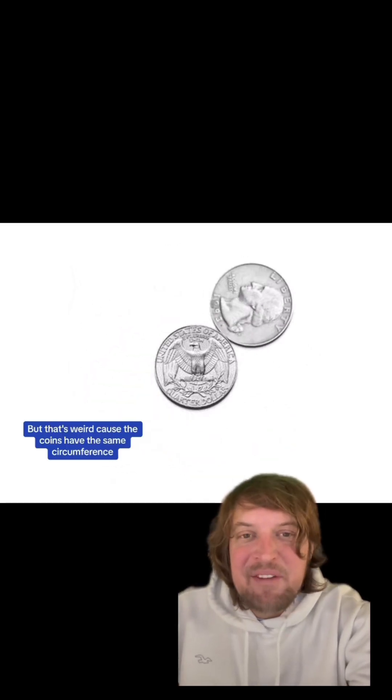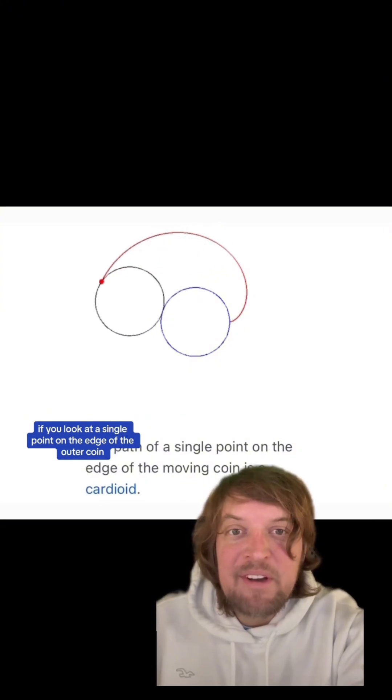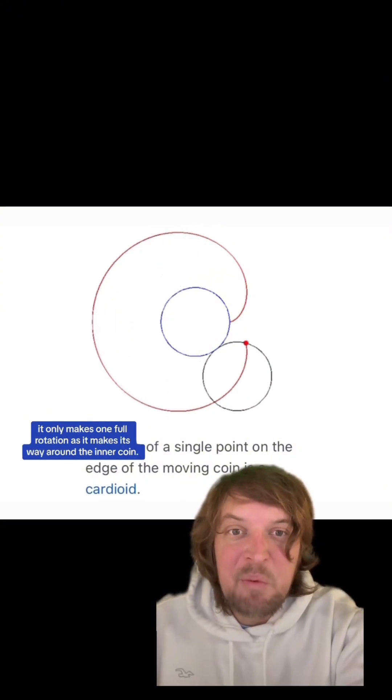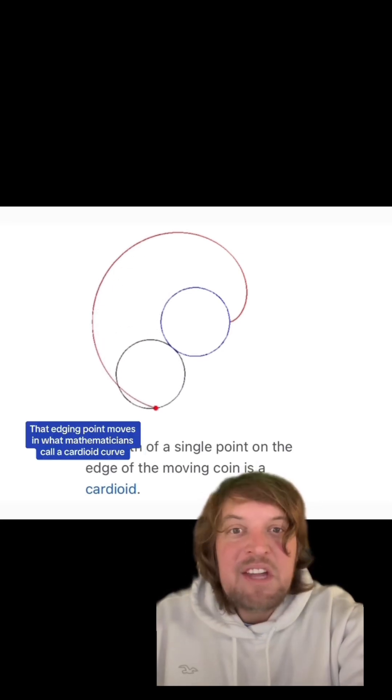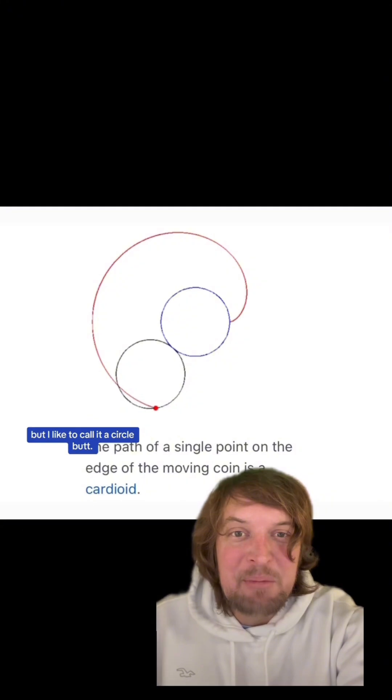But that's weird because the coins have the same circumference. And to make it even weirder, if you look at a single point on the edge of the outer coin, it only makes one full rotation as it makes its way around the inner coin. That edge point moves in what mathematicians call a cardioid curve, but I like to call it a circle butt.